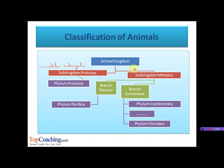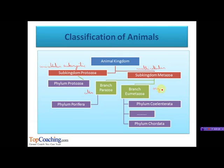The other sub-kingdom is Metazoa. It includes multicellular animals. On the basis of level of organization, Metazoa is further divided into two branches: the first one is branch Parazoa and the second is Eumetazoa. In Parazoa, the cells are loosely aggregated and do not form true tissues or organs. It includes the phylum Porifera, whose examples are sponges. The second branch is Eumetazoa, which includes truly multicellular organisms with organ and organ-system level of organization. It includes phyla Coelentrata to Chordata.